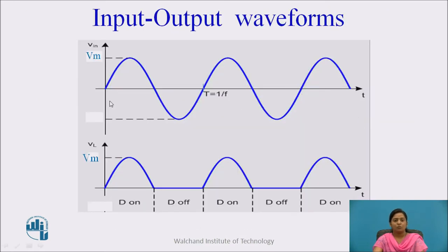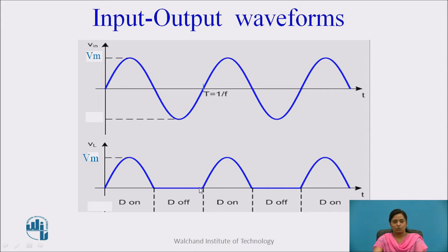These are the input-output waveforms. During the positive half cycle of the input signal, the diode is ON and current flows through the device — voltage is present across the load. During the negative half cycle of the input AC signal, the diode is OFF, current flowing through the load is 0, and voltage across the load is also 0. These are the output waveforms for a half wave rectifier.